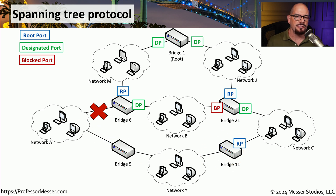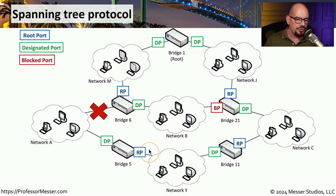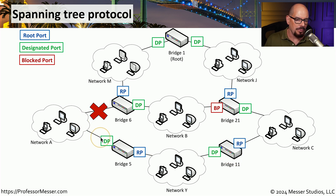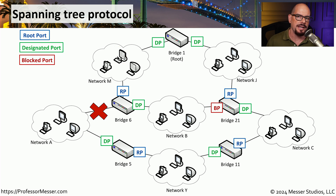Fortunately, Spanning Tree recognizes that we have this disconnection and begins clearing out the existing configuration and relearning the topology of the existing network. Spanning Tree has changed Bridge5 so that the root port is now on the other side, and it has removed the blocked port on Bridge11, allowing us on network A to communicate all the way through the network back to network M without creating another loop.